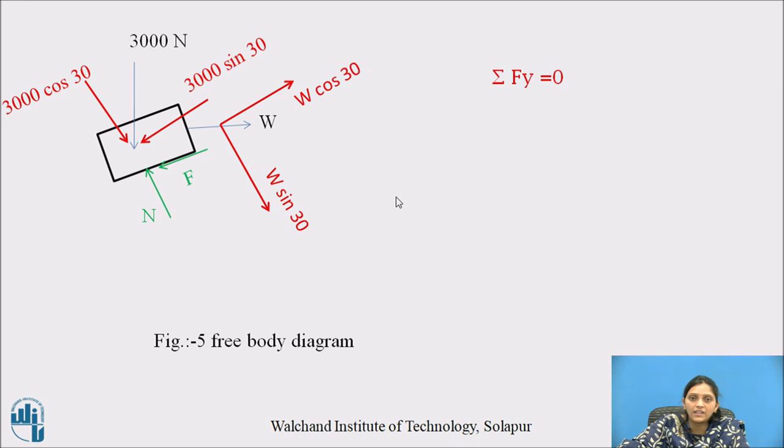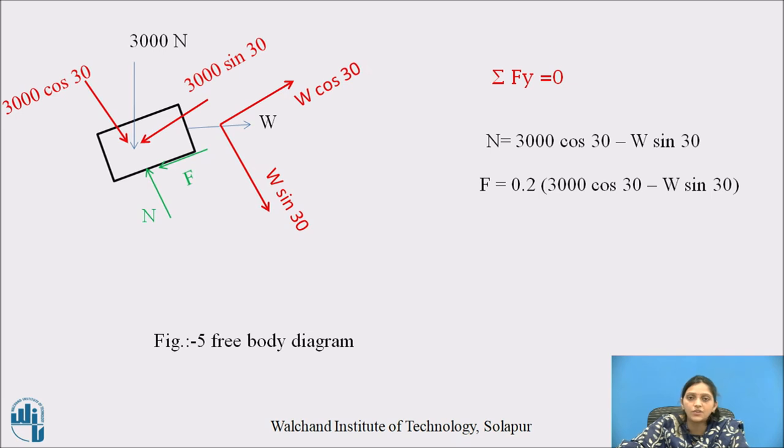In Y direction there are total three forces: 3000 cos 30, N, and W sin 30. So N equals 3000 cos 30 minus W sin 30. So this will be the value of N.